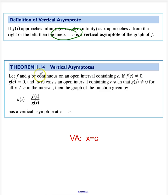Now, the theorem behind vertical asymptotes is if f and g are continuous, and f of c does not equal 0, but g of c does equal 0, then x equals c is a vertical asymptote.